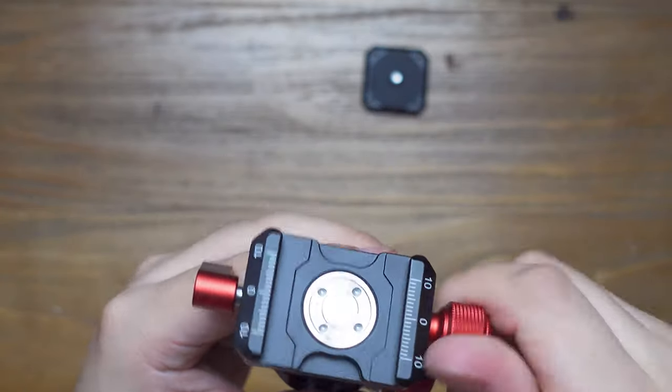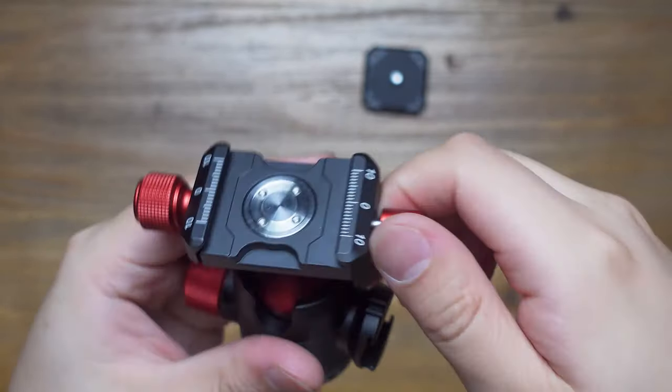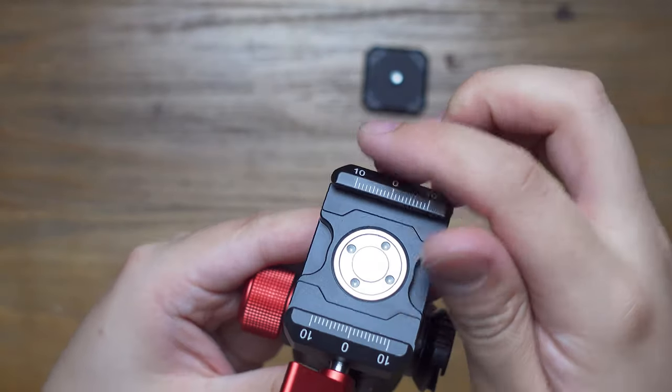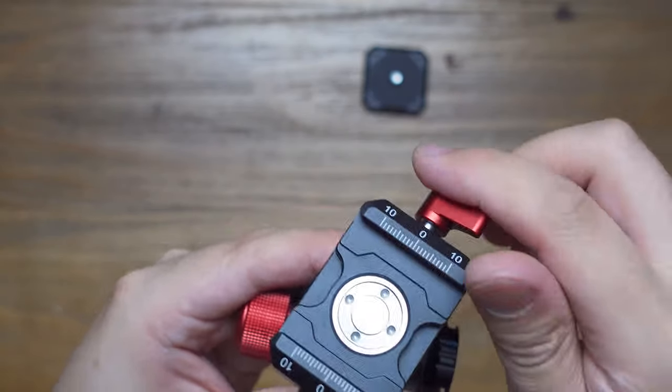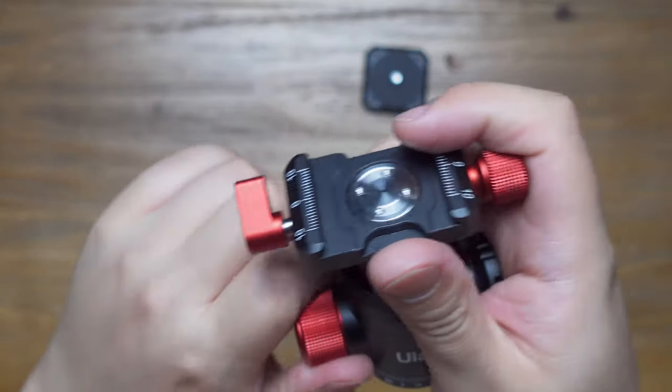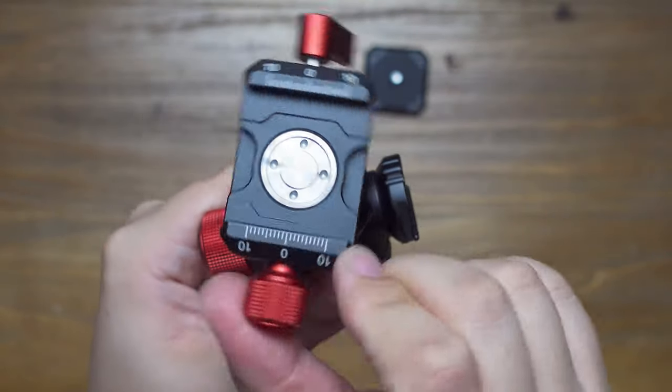For the top design of the ball head, not only is it a standard Arca Swiss quick clamp, but when you loosen that screw, it can also function as a rotator. So it's a double panorama rotator—one on the bottom, one on top. You can first level the camera, and then rotate on top of the clamp.